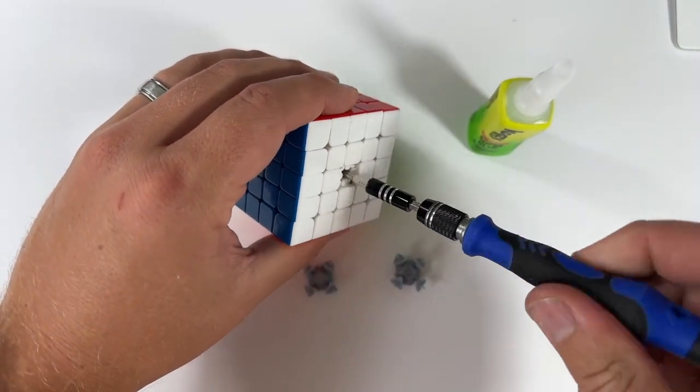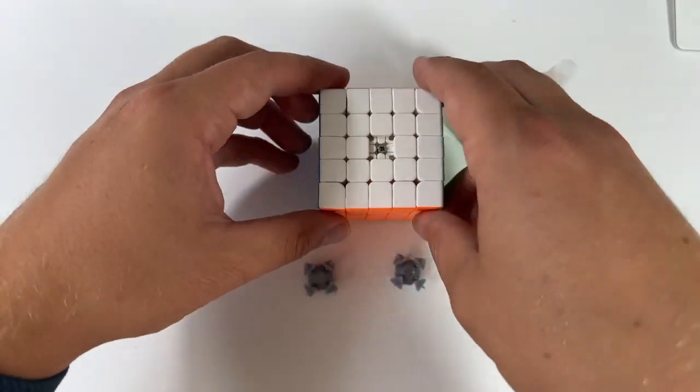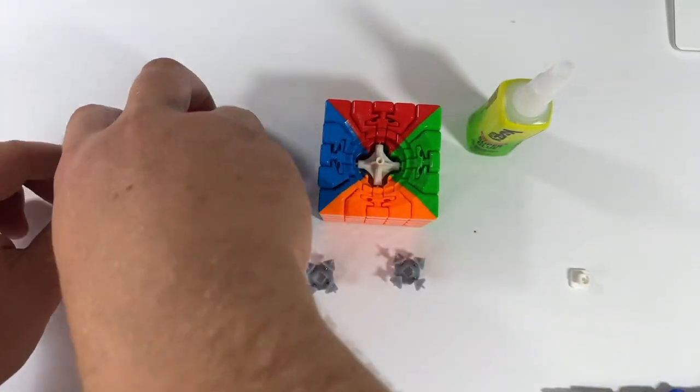This video covers the installation of the C-cubed corner core kit for 5x5 cubes. The first step is to remove the top layer of the cube and set aside.